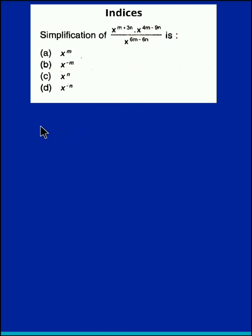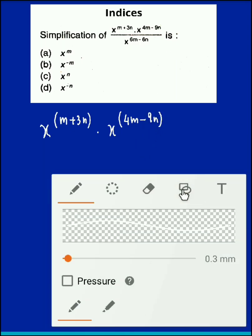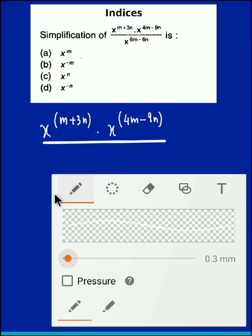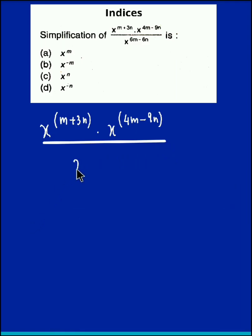So let us write down the given expression. The given expression is x raised to m plus 3n times x raised to 4m minus 9n. Now we just put a line over here, the whole thing divided by x raised to 6m minus 6n.